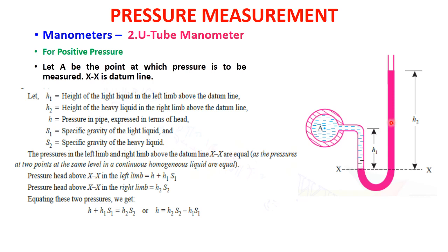Since pressure at two points at the same level in a continuous homogeneous liquid are equal, we equate pressures on both sides to maintain equilibrium. The manometric liquid is always the heavier liquid compared to the lighter liquid whose pressure is to be measured. Pressure above XX in the left limb equals the unknown pressure h plus the lighter liquid head: h + h1·s1.